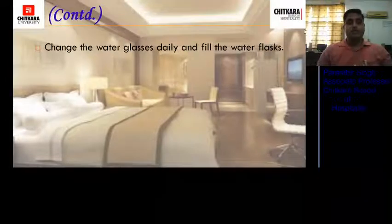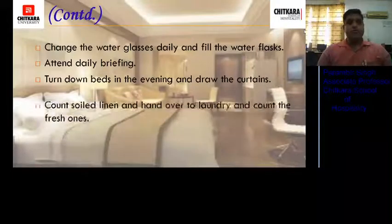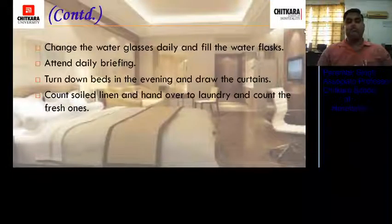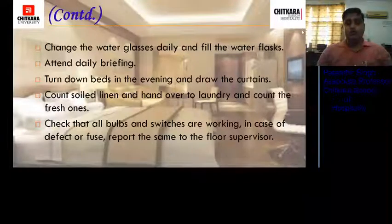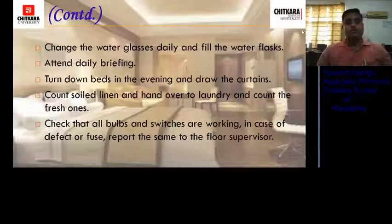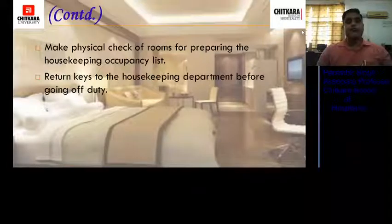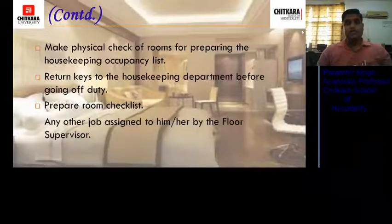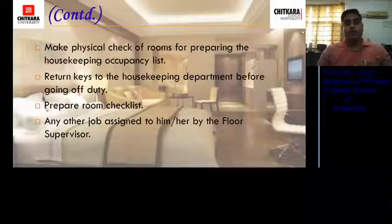Change water glasses daily and fill water flasks. Attend daily briefing before the shift starts. Turn down beds in the evening and draw the curtains. Count soiled linen and hand over to laundry, and count fresh linen once received. Check that all bulbs and switches are working — in case of a defect or fuse, report it to the floor supervisor for timely rectification. Make a physical check of rooms for preparing the housekeeping occupancy list to be sent to the front office. Return keys to the housekeeping department before going off duty. Prepare room checklists and perform any other job assigned by the floor supervisor.